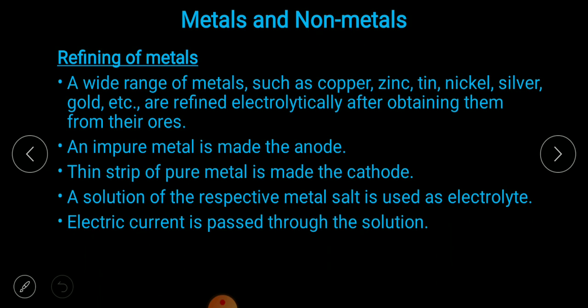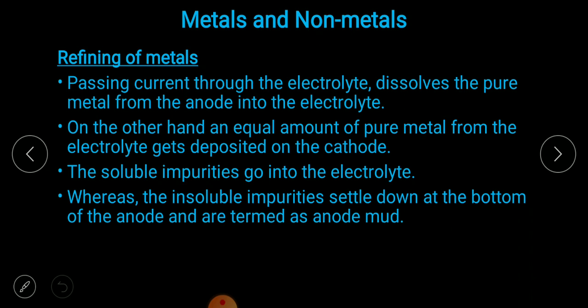Refining of metals: a wide range of metals such as copper, zinc, tin, nickel, silver, and gold are refined electrolytically after obtaining them from the ore. The impure metal is made the anode, and a thin strip of pure metal is made the cathode. A solution of the respective metal salt is used as electrolyte. When electric current is passed, the pure metal from the anode dissolves into the electrolyte, and an equal amount of pure metal gets deposited on the cathode.